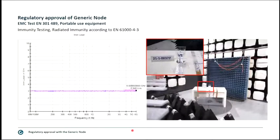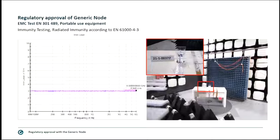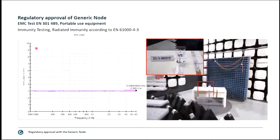Radiated immunity is also tested at Citicom's facilities. You can see the device on the table. An antenna generates a homogeneous electric field of 3 V/m, applied to the device from 80 MHz up to 6 GHz. The device must not react — the LoRa communication with the gateway must remain up and running under any polarization and any device orientation on the turntable. The device passed 3 V/m, and additional tests at 10 V/m especially in the lower frequency range also passed.